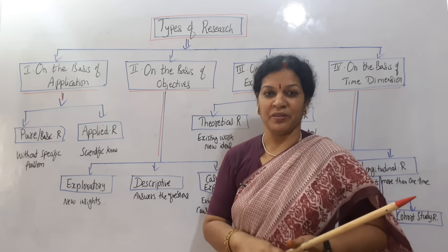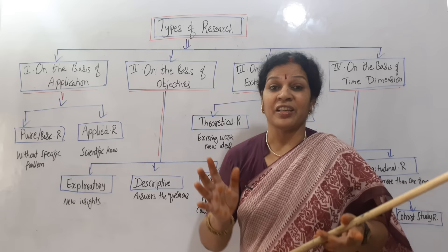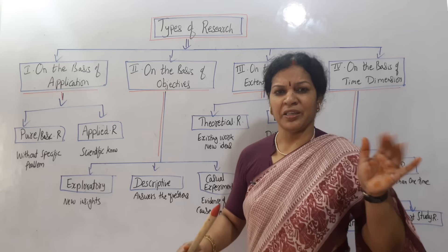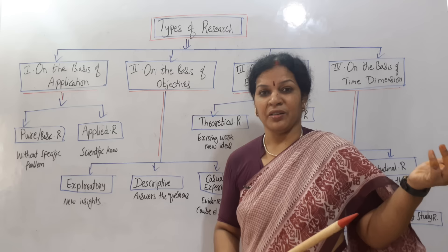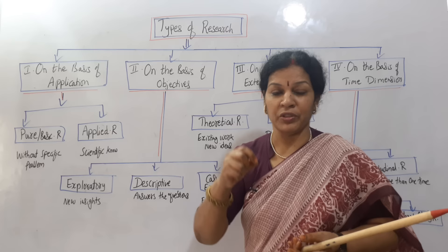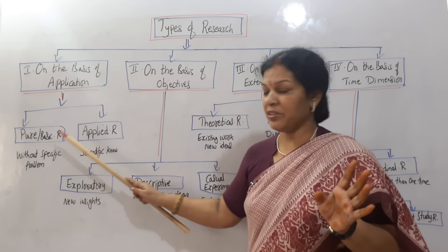On the other side is applied research. Here, scientific knowledge is required — how we can implement it, what results we are going to get, and how we give the conclusion — everything is done in a systematic, scientific way. That is why we call it applied research. Pure/basic/fundamental research is done without knowing any specific problem, while applied research identifies a specific particular problem — especially in science, world economic banks, stock exchanges — where they identify a problem scientifically and want to prove it and give a conclusion.